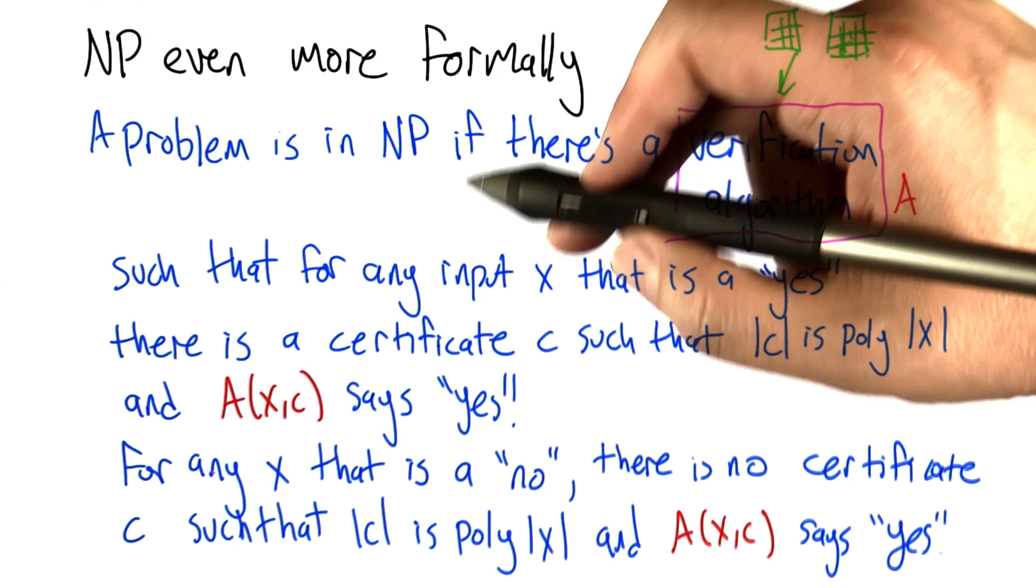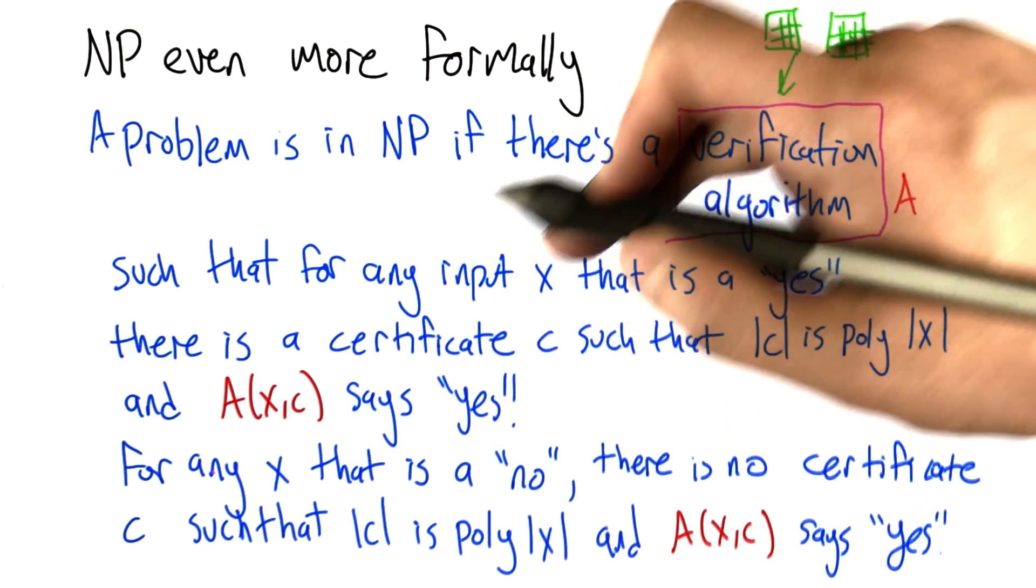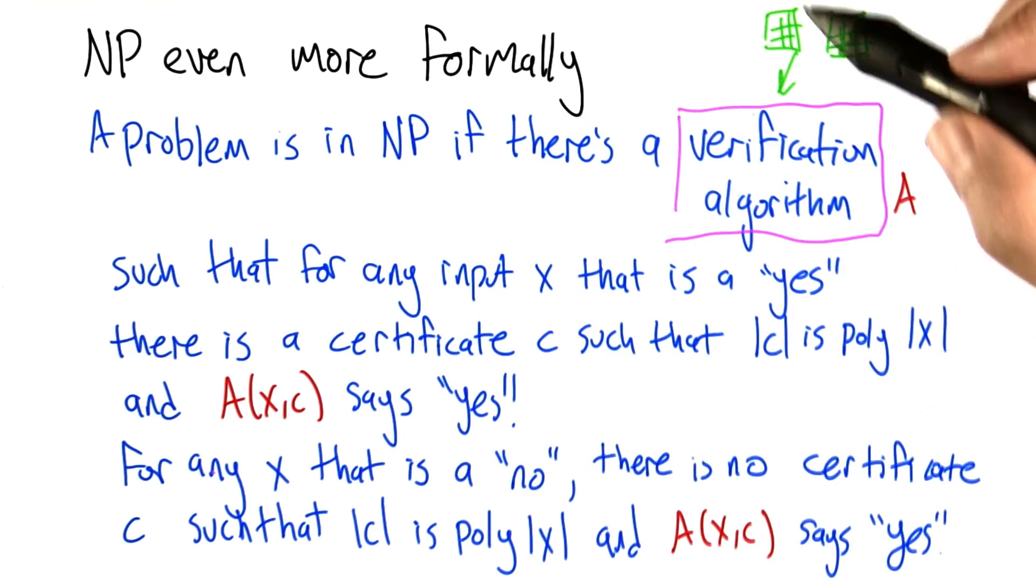This fits the NP definition because for any solvable Sudoku problem, there's some grid we can show that solves it. But for any problem that's not solvable,